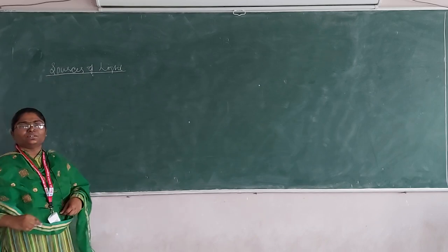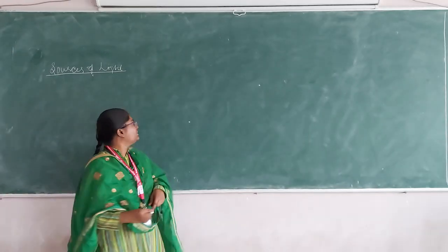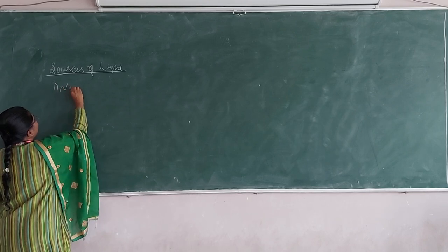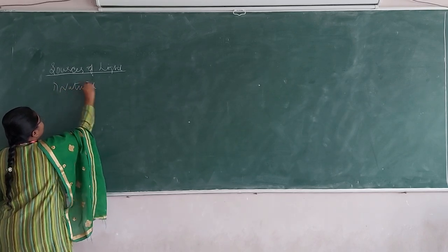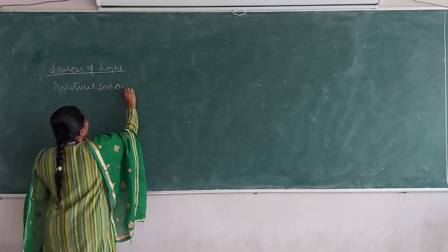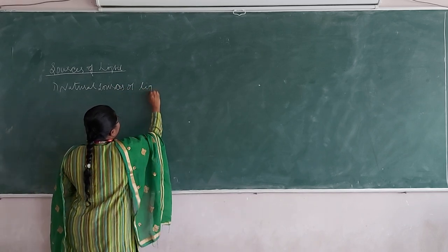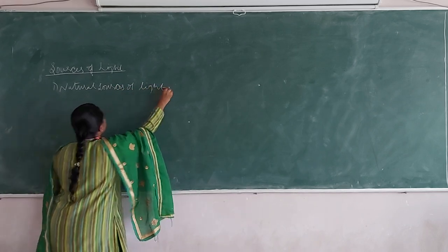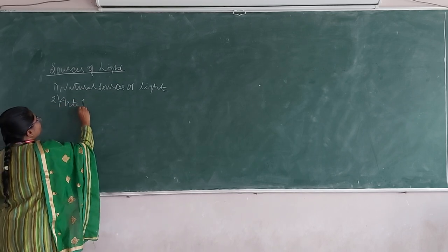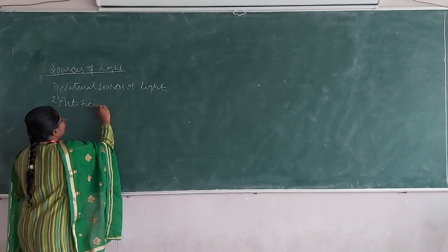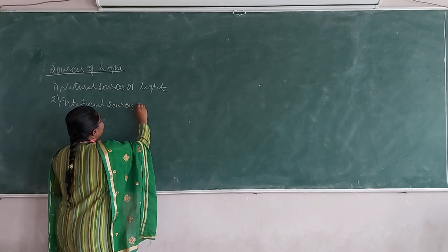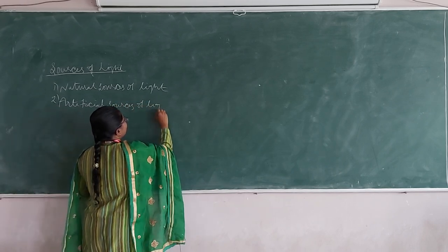Basically the sources of light are two types: number one, natural sources of light, and number two, artificial sources of light.